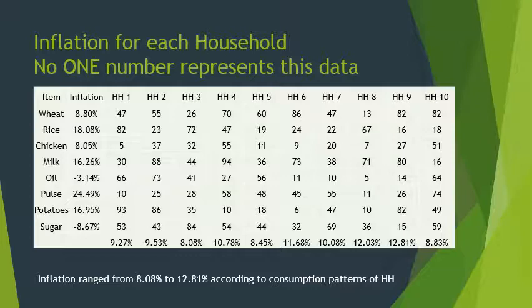For household one, which purchased 47 units of wheat, 82 units of rice, 5 units of chicken, 30 units of milk, 66 units of oil, 10 units of pulses, 93 of potatoes, and 53 of sugar — if we use these quantities as weights and multiply them by the inflation rates then divide by their sum, that gives us 9.27%. That is the inflation rate experienced by household one.